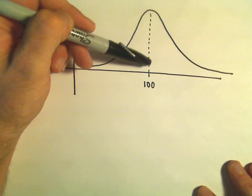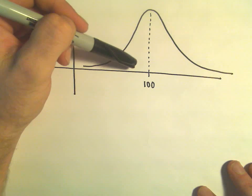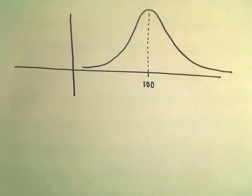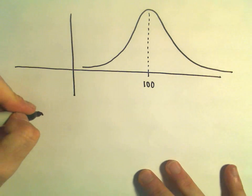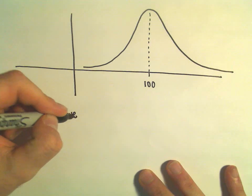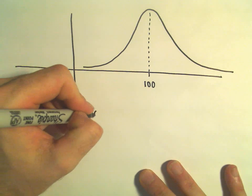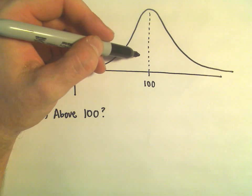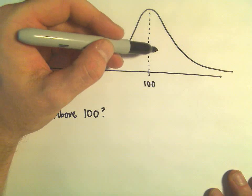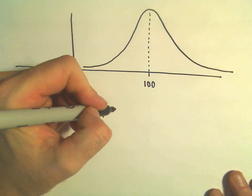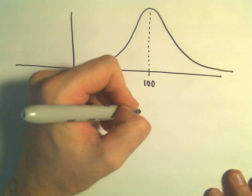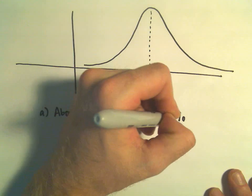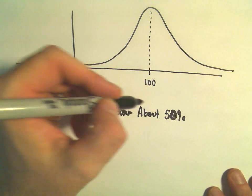Since our mean is at 100, 50% of the observations are going to be to the left and 50% are going to be to the right. So to answer Part A — above 100 — we don't have to do much at all. About 50% of the observations will be above 100.